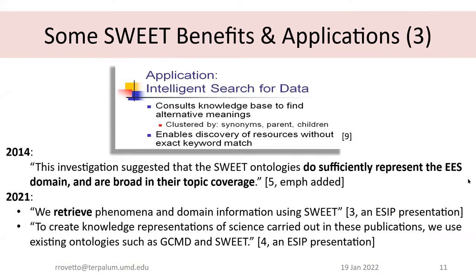Some further benefits and applications: SWEET enables the discovery of resources without an exact keyword match — semantic search, effectively. In 2014, SWEET was found to sufficiently represent the Earth and environmental science domain, broadening topic coverage. And in 2021, from some ESIP presentations, folks were found to be retrieving phenomenon domain information using SWEET and creating knowledge representations of science.